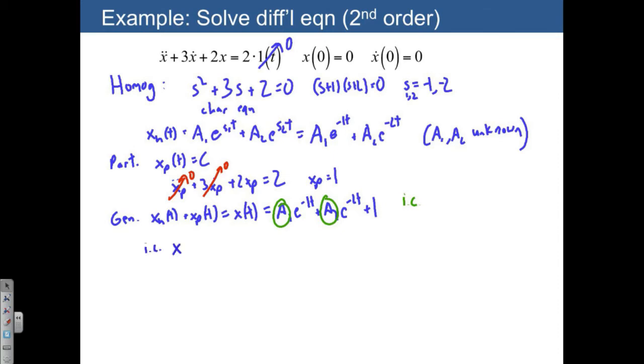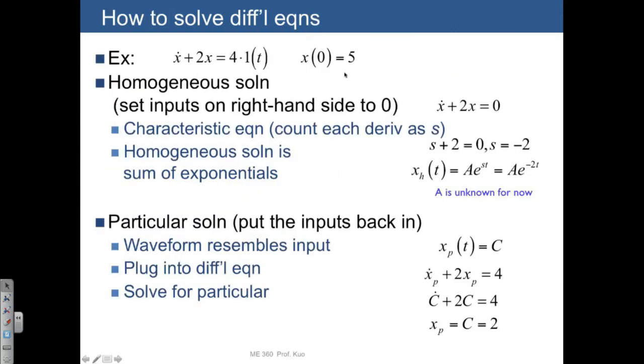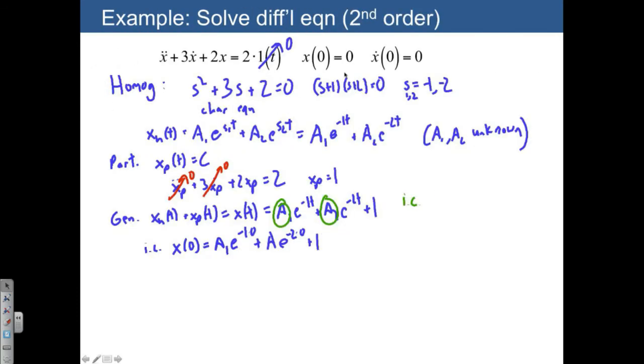So when we plug in the initial conditions, x of 0 is going to be a1 e to the negative 1 times 0 plus a2 e to the negative 2 times 0 plus 1. And that all has to be equal to the initial condition that's given 0.